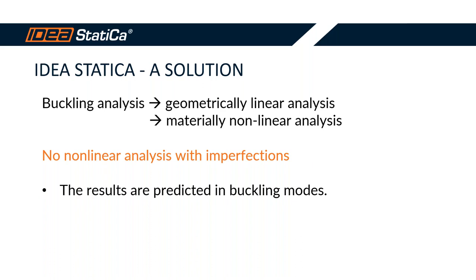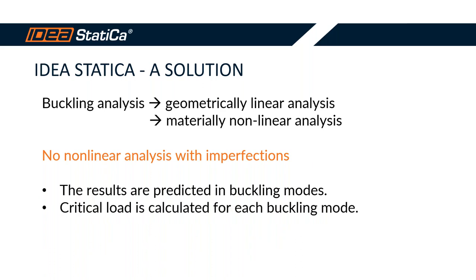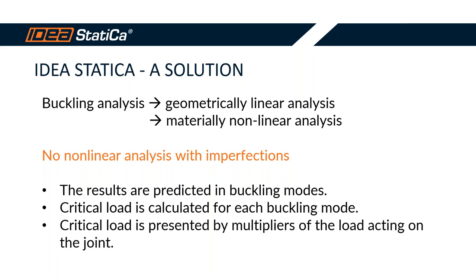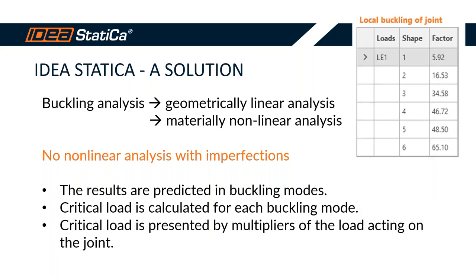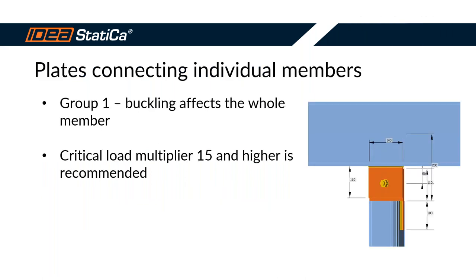IDEA Statica enables buckling analysis based on geometrically linear and materially nonlinear analysis — it does not handle imperfections, so no nonlinear analysis with imperfections. The results offered are buckling modes, and for each buckling mode a critical load is provided. This critical load is presented as a multiplier of the loads acting on the joint. So for each shape you get a critical load multiplier. For plates connecting individual members — the first group — this multiplier should be 15 or higher, as recommended by the code.